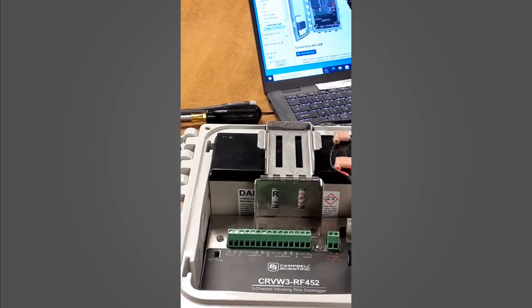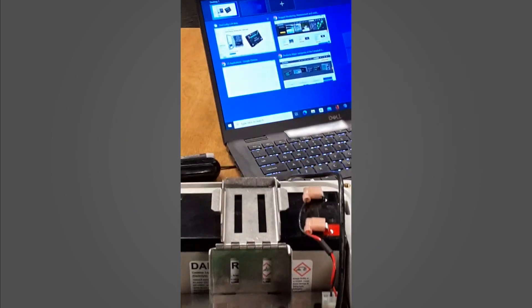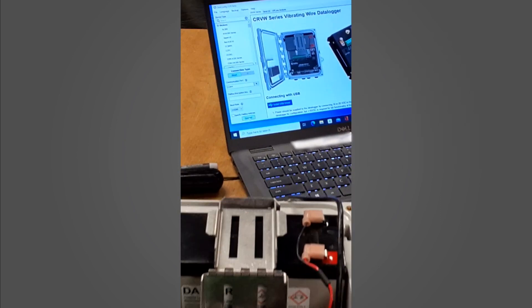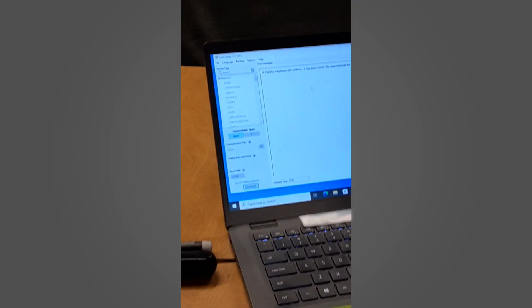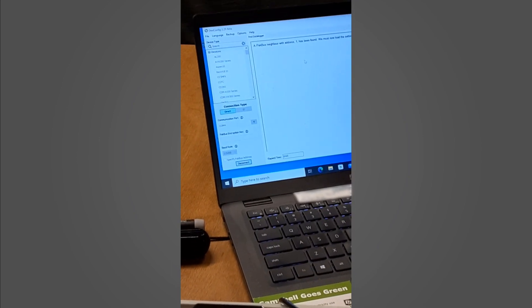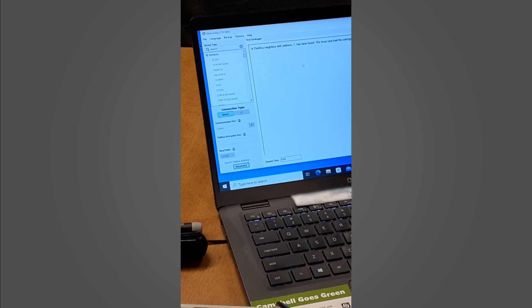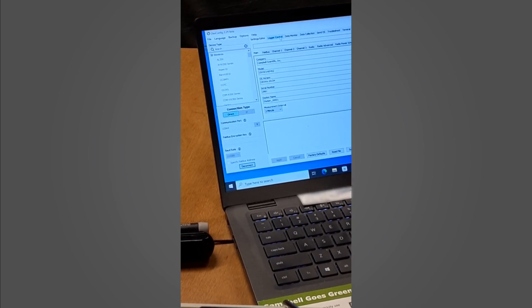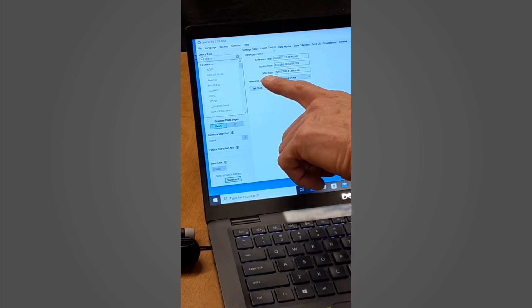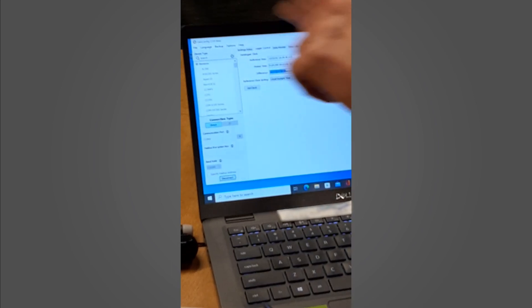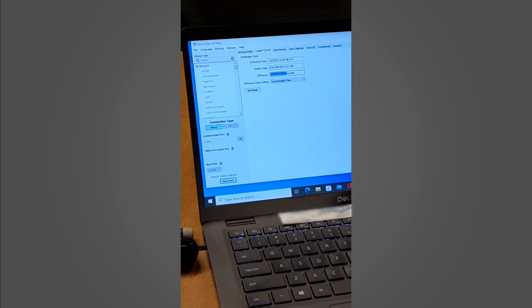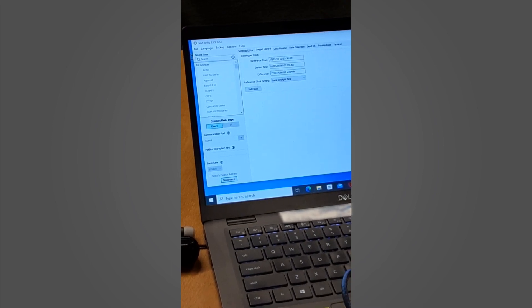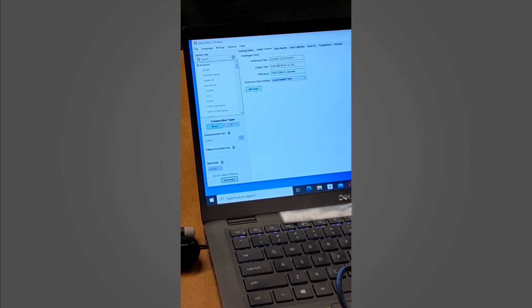So we will connect back to this. Once it comes up here, we go into the logger control. We will see that the data logger clock has been diverted back to the original date. So we want to set the clock to our laptop time.